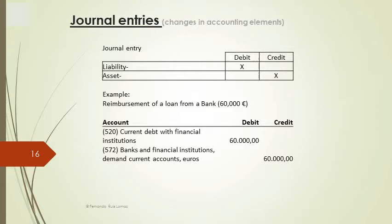In the next slide we find an example of a decrease in the balance of a liability, which corresponds with a decrease in an asset. The transaction is the reimbursement of a loan from a bank for €60,000. We debit the liability — the account current debt with financial institutions — for €60,000, and at the same time we credit an asset for the reduction in cash, using the account banks and financial institutions demand current accounts.